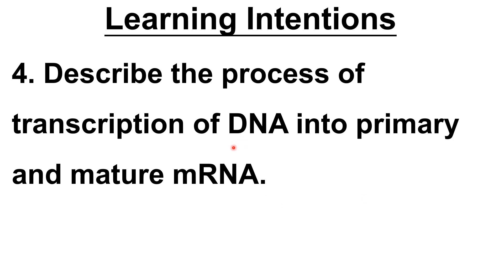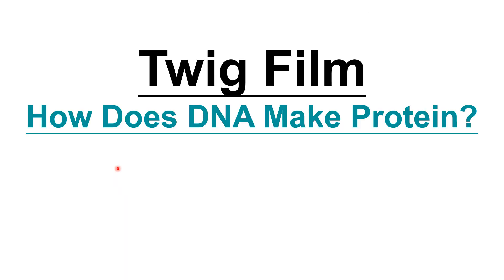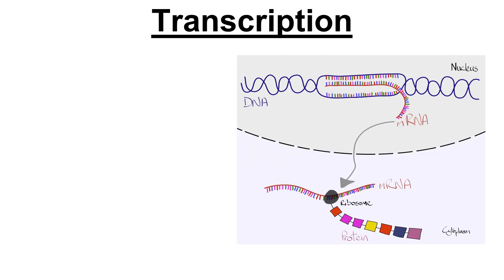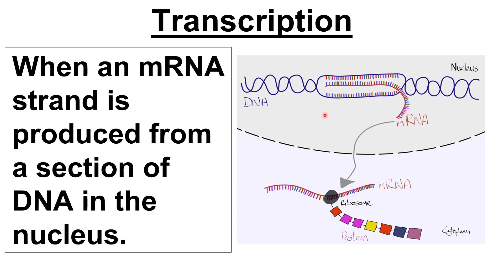Now we're going to look at the process of transcription. Transcription is when you turn DNA into mRNA — it happens in the nucleus. There's a Twig video for this; search for 'How does DNA make protein.' Transcription is defined as when an mRNA strand is produced from a section of DNA in the nucleus. It's not all the DNA being copied — you're producing a protein using the gene which codes for that protein, so it's a section of DNA copied into mRNA. That is transcription, and it occurs in the nucleus.